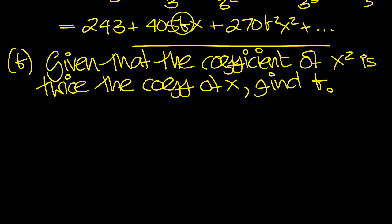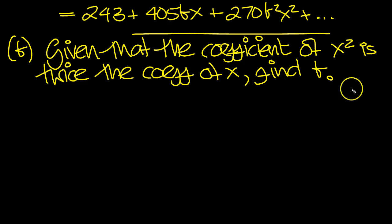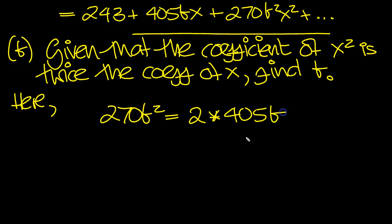So here's the expansion of the first three terms. The coefficient in x squared, then, is twice the coefficient of x. So let's have a look at this then. The coefficient here is 270b squared. That's equal to twice the value of the coefficient of x.